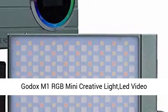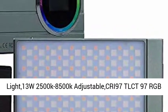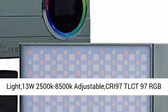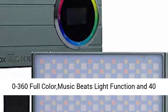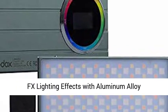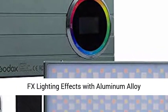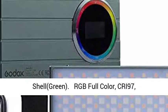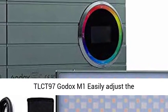Godox M1 RGB Mini Creative Light LED Video Light: 13W, 2500K to 8500K adjustable, CRI 97, TLCI 97, RGB 0-360 full color, music beats light function, and 4D FX lighting effects with aluminum alloy shell.